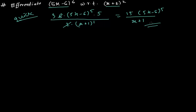So that was the quick method by which you differentiate one function with respect to another function. But we need to do it formally. You should use the quick method only for checking whether you are doing it right. Now let's do it properly.